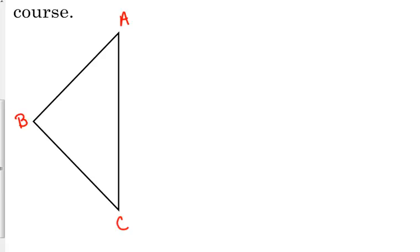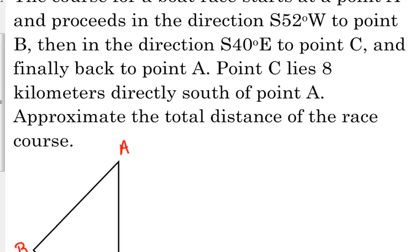Now I know that because of the directions. So now let's talk about the bearings. So if we start at point A and it says that it goes in the direction south, 52 degrees west of point B. So what you need to do is you need to draw yourself a little north, south, east, west line at each of these. Now, if you don't know your directions, we might have problems. Never eat soggy waffles. Never eat soggy waffles. Starting at the top, never eat soggy waffles.